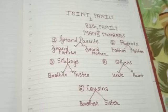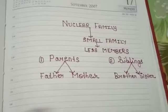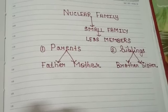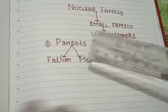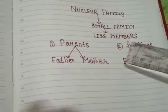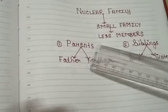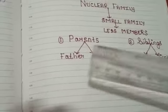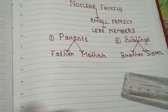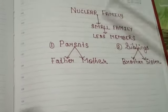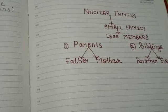Now let us discuss about the nuclear family. Nuclear family means a small family, a family in which there are fewer members. Nuclear family members include parents — that is our father and mother — and siblings, that is our real brother or sister. Nuclear family is a small family. Understood children?